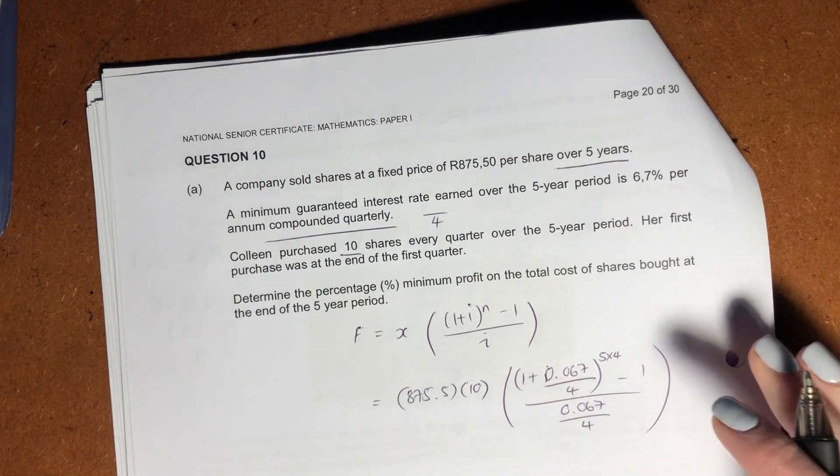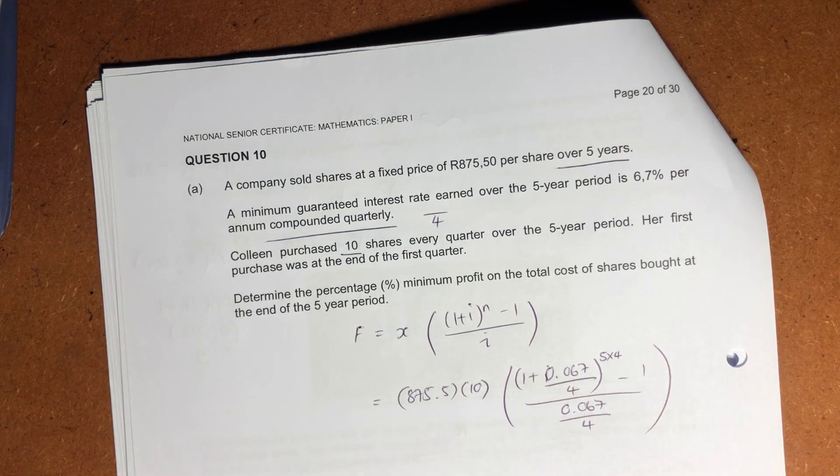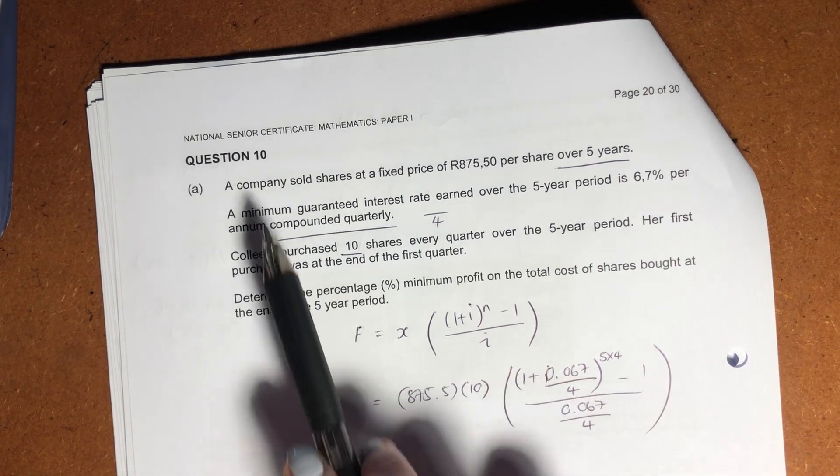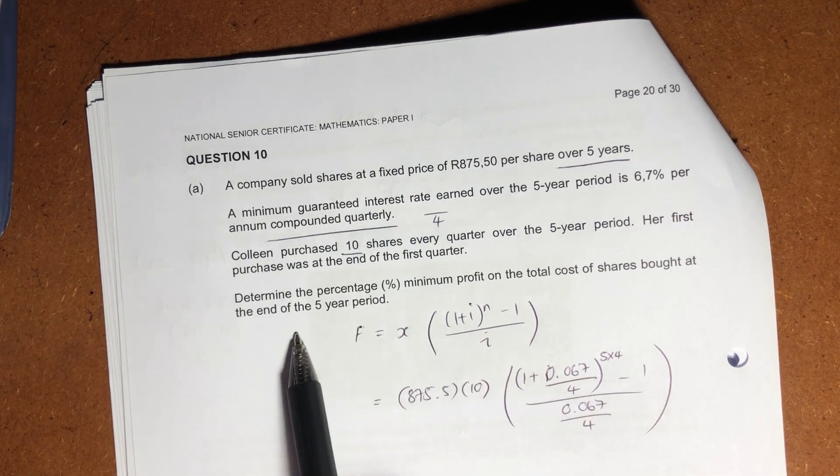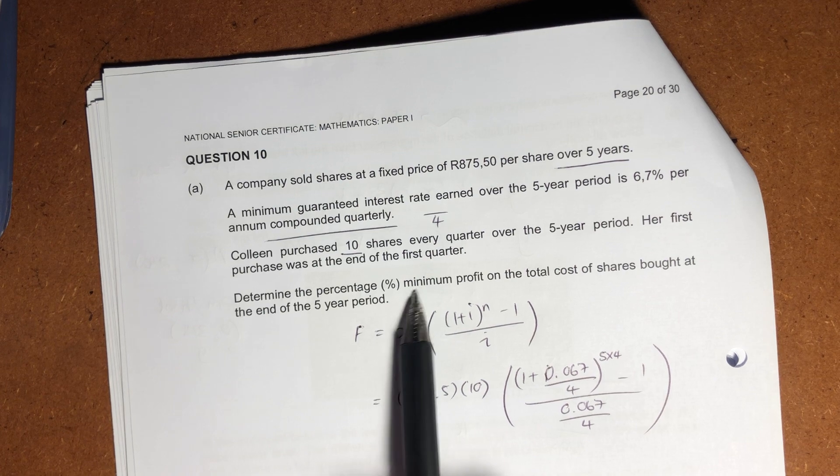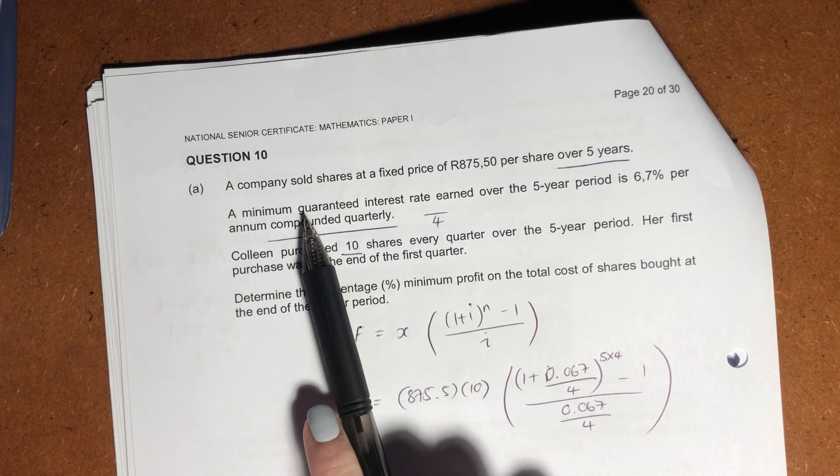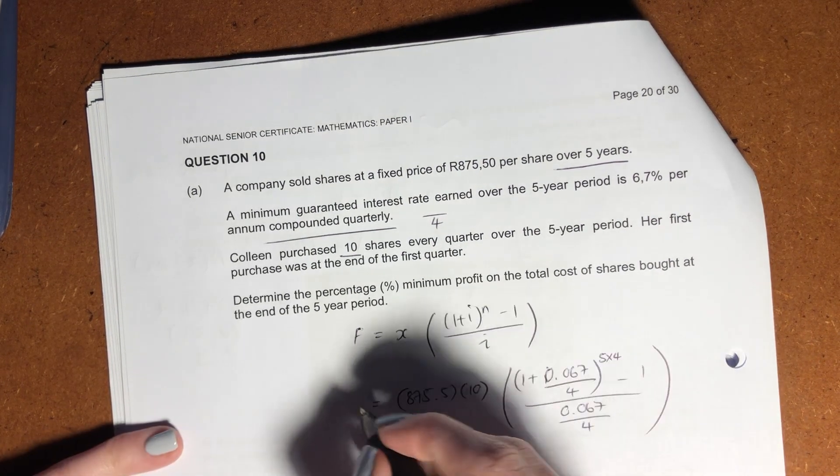Then we have to say 1 plus i, right? And what is our i value? It's 0.067 over 4. And what is our exponent? Our exponent there, or our time period there, is going to be 5 years but times by 4 because we are working in quarters. And remember there's that matching principle, right? Your interest rate and your time period and your installments must all have the same frequency. Okay, minus 1, and we're going to put it over 0.067 over 4. Now you could be saying, but why are you using that interest rate? Well, two reasons. It's the only one given. But also, that was the minimum guaranteed interest rate. It's how I asked you for the minimum profit. The minimum profit is going to be when we get the minimum guaranteed.